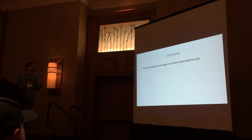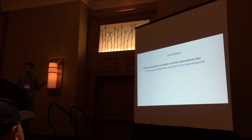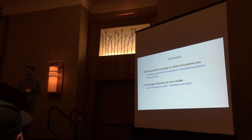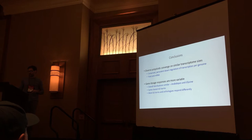To wrap up: diverse polyploids seem to converge on similar transcriptome sizes, suggesting this is a conserved and persistent response to genome duplication. It holds true in nascent autopolyploids as well as established allopolyploids, and in both total RNA and messenger RNA. In contrast, dosage responses are much more variable — we see a similar overall distribution across the two species and some shared GO terms by dosage response category, but most GO terms and orthologs are behaving differently in the two systems.